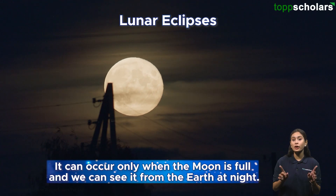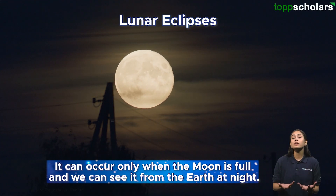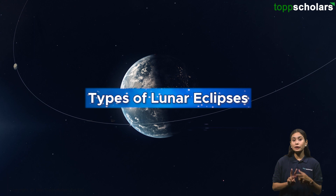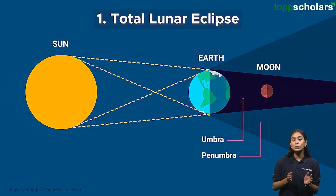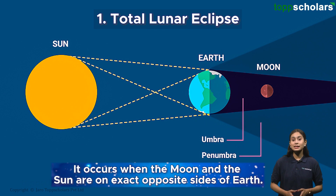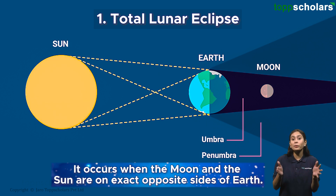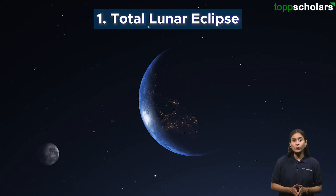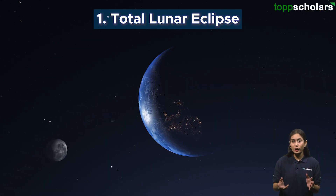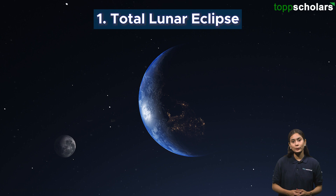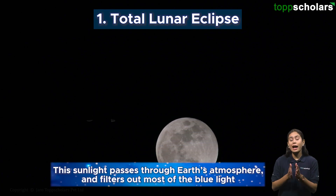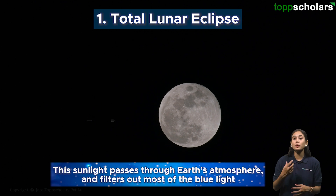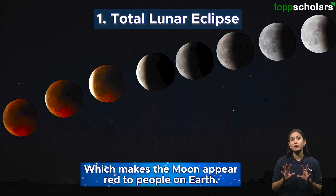A lunar eclipse can only occur when the moon is full and visible from Earth at night. There are two types of lunar eclipses. The first is the total lunar eclipse, which occurs when the moon and the Sun are on exact opposite sides of the Earth. Although the moon is in Earth's shadow, some sunlight still reaches the moon by passing through Earth's atmosphere, filtering out most blue light.